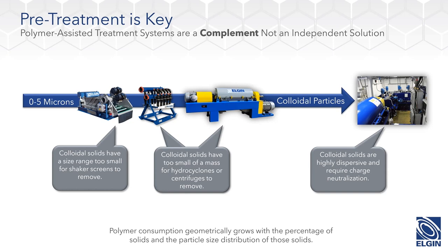A decanter centrifuge can indeed be a good pretreatment to ensure you're only sending the finest solids to your dewatering system. We have applications with scalping systems using a shaker or rotary device, followed by hydrocyclones, sometimes going straight to a decanter centrifuge that makes a cut at 10 microns — and everything else goes to the dewatering system, which includes the polymer mix system, the injection system, and a subsequent decanter centrifuge. Polymer treatment is never an independent solution — it's a complement that accounts for pretreatment, sizing, particle size distribution, and percent solids fed to the polymer system.